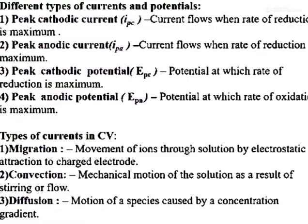There are four types of important parameters in a cyclic voltammogram: two types of currents and two types of potentials. These four are peak cathodic current, peak anodic current, peak cathodic potential, and peak anodic potential. Later, in an example, I will explain all four of these parameters.